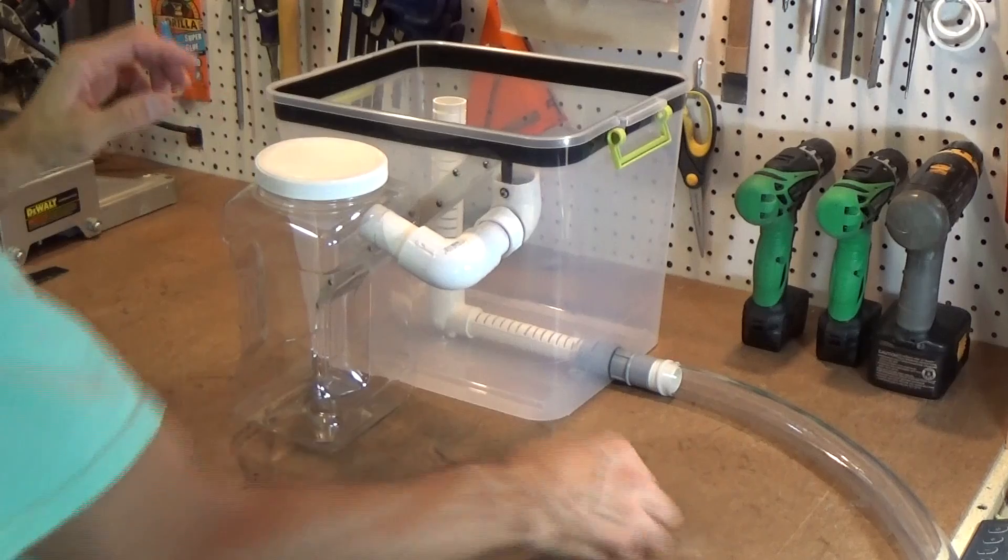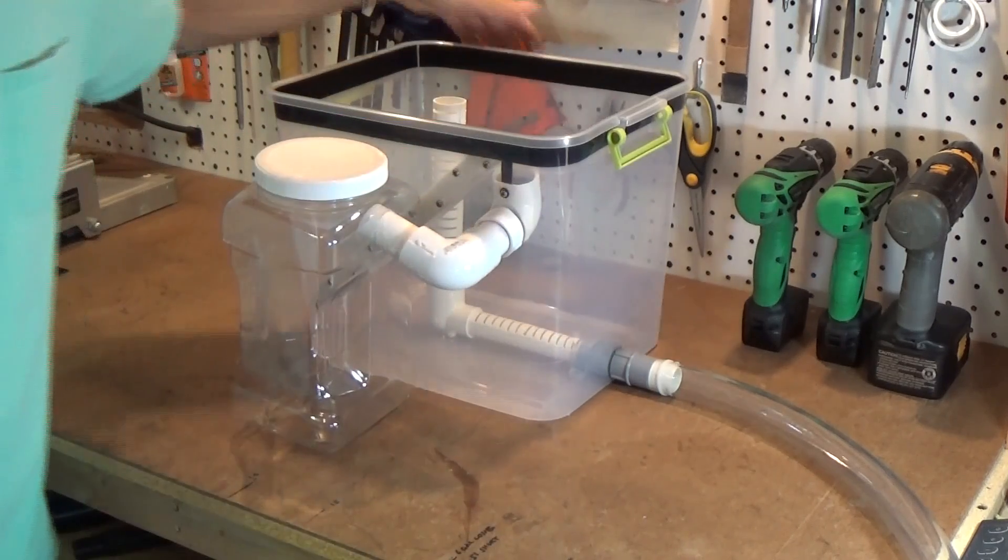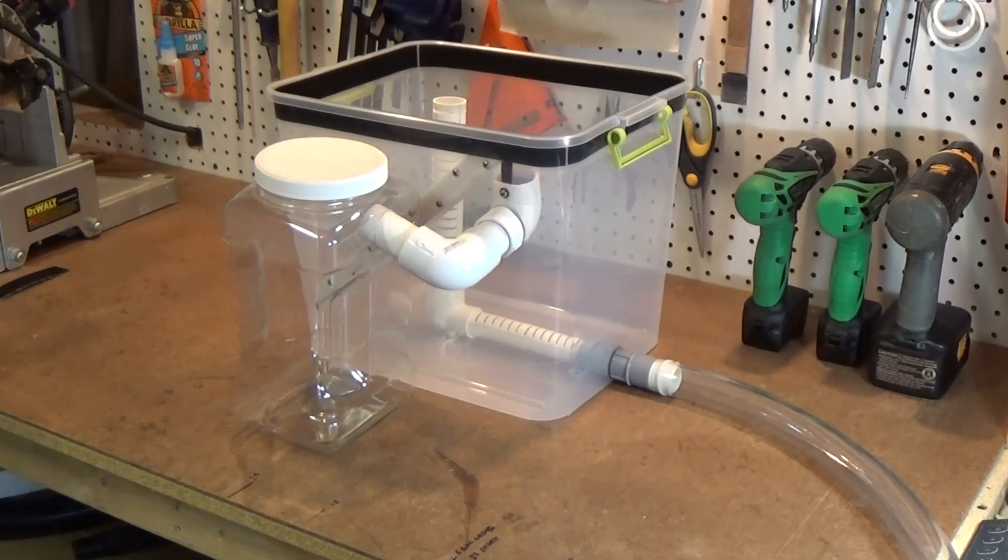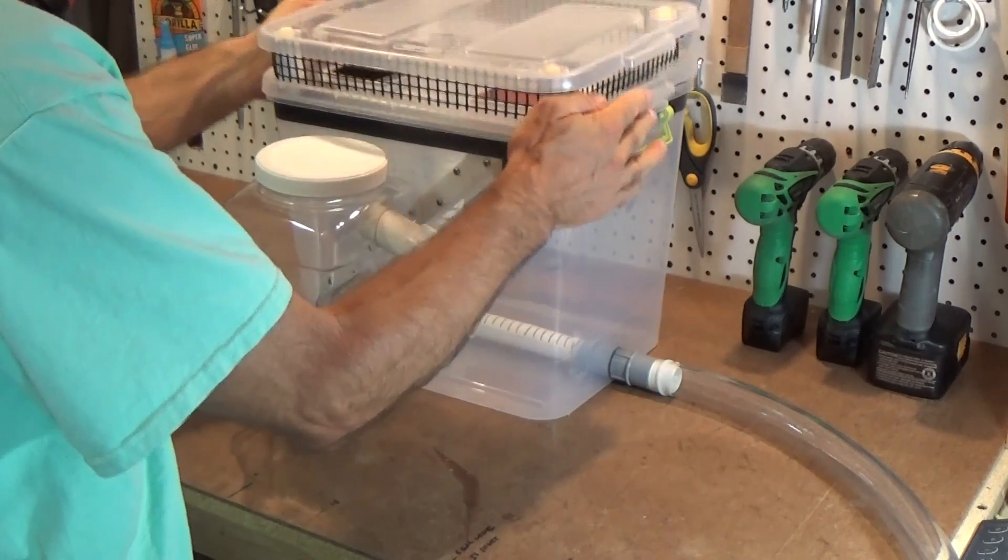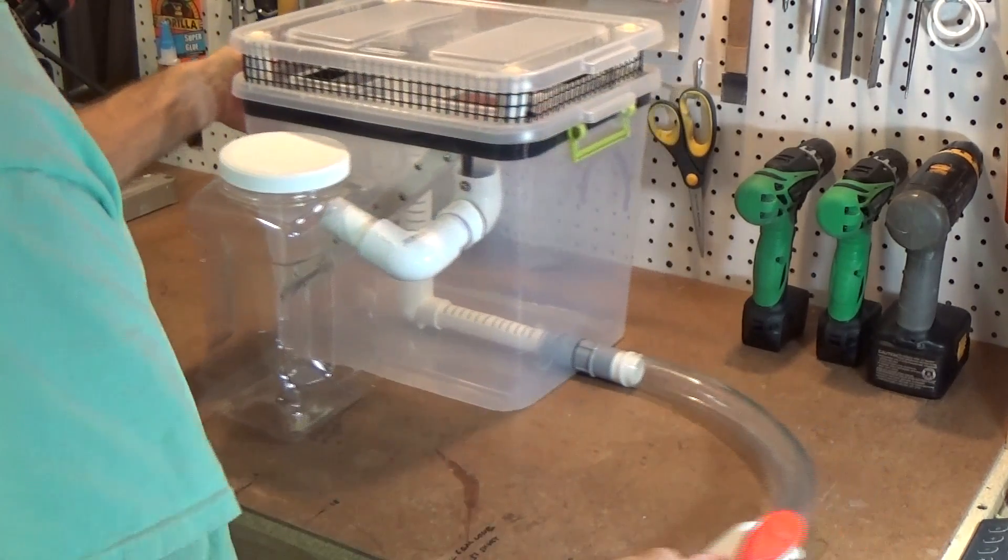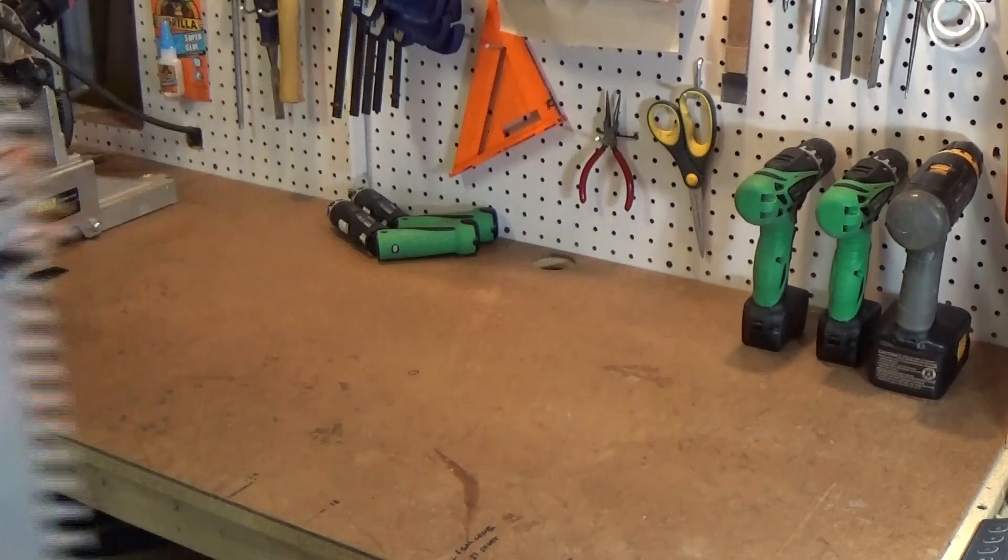So that's it for the six gallon unit. Of course, there's more to know for getting it set up to actually start composting and attracting black soldier fly females. But I'll cover that in another video.